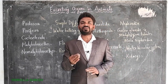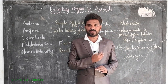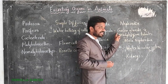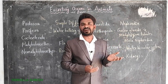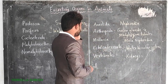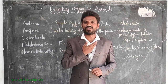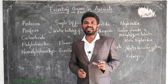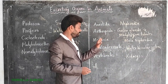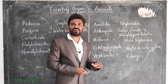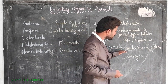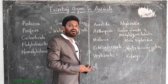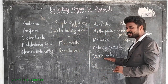Next is Arthropoda, which is the largest group in the animal kingdom with the most number of organisms. Arthropoda organisms excrete waste material using green glands and Malpighian tubules — these are the two kinds of excretory organs in Arthropoda. Next is Mollusca; snail is the best example. Mollusca organisms excrete using metanephridia, which is the excretory organ in the Mollusca group.